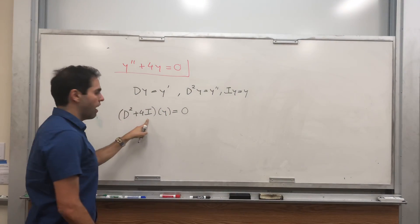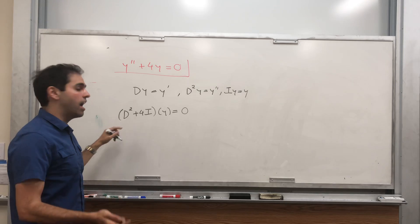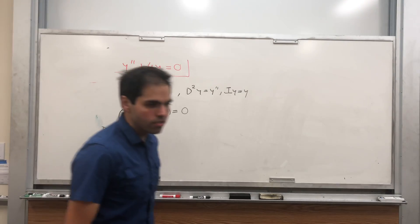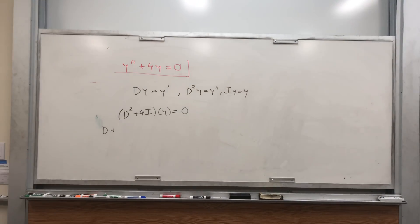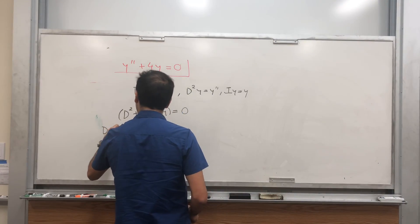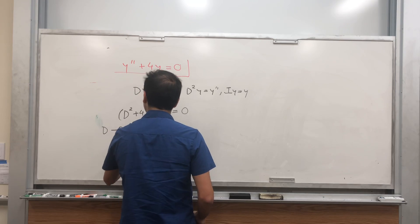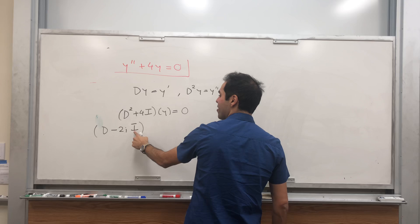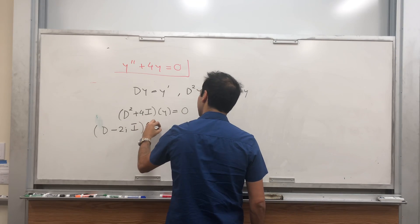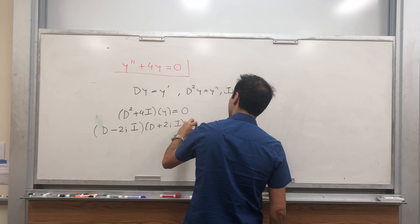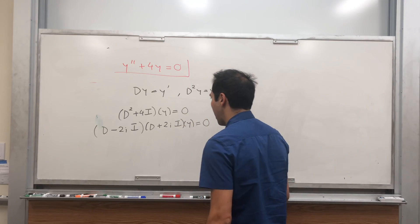And this thing now, we can just factor it out in terms of complex numbers. So it's (D minus 2i) times (D plus 2i), y equals zero.